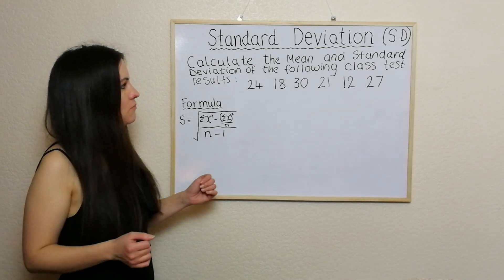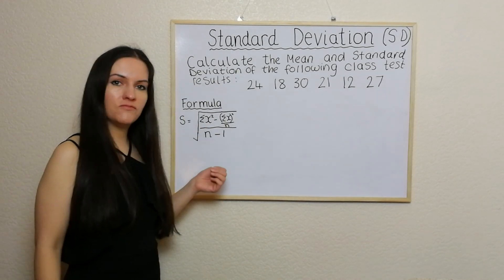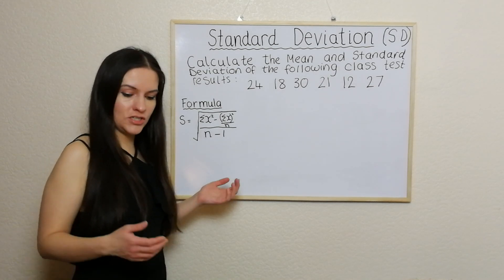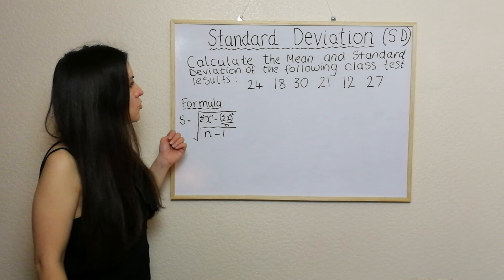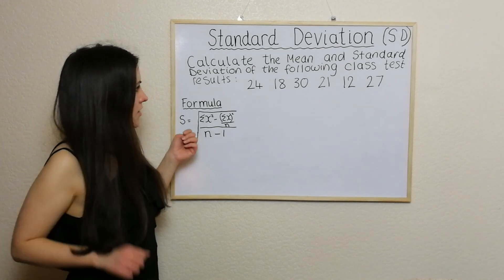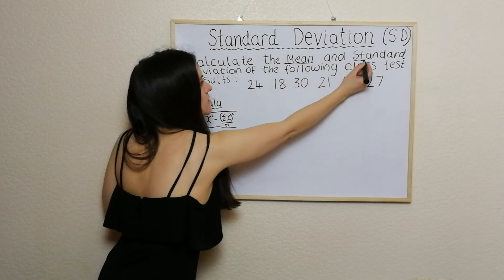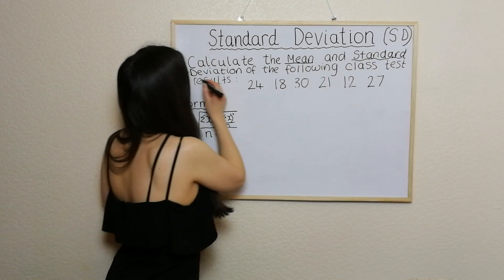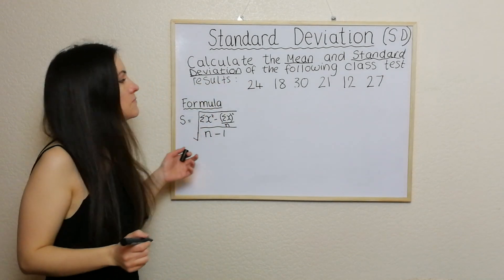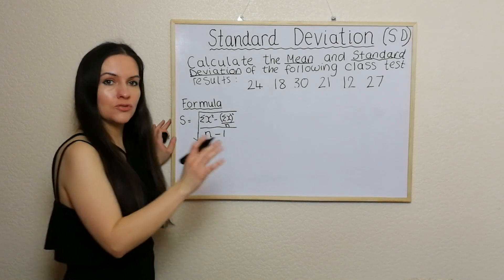So with that in mind, I'm going to move on to one of these questions here. This is a very typical example of what you could expect to get in a National 5 or GCSE question. We're asked to calculate the mean and the standard deviation of the following class test results.